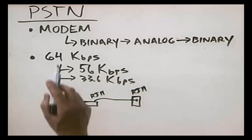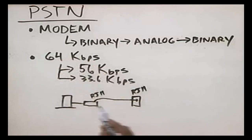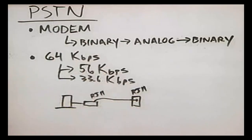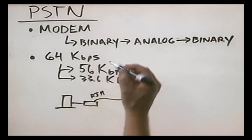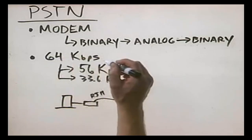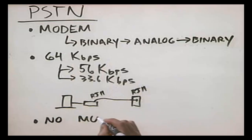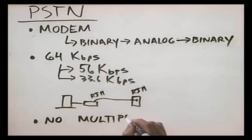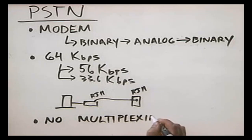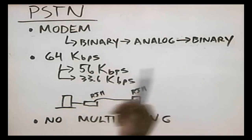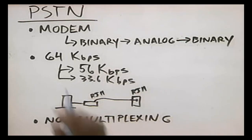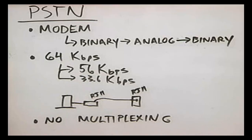In addition to the slow speeds, one of the problems with using a modem on the public telephone network is that it takes the entire channel — there's no multiplexing. That means if you're on the internet, nobody else can use the phone. Conversely, if somebody's using the phone, you can't use the phone with a modem to connect to the internet. You probably already know that from your experience using modems in the past.